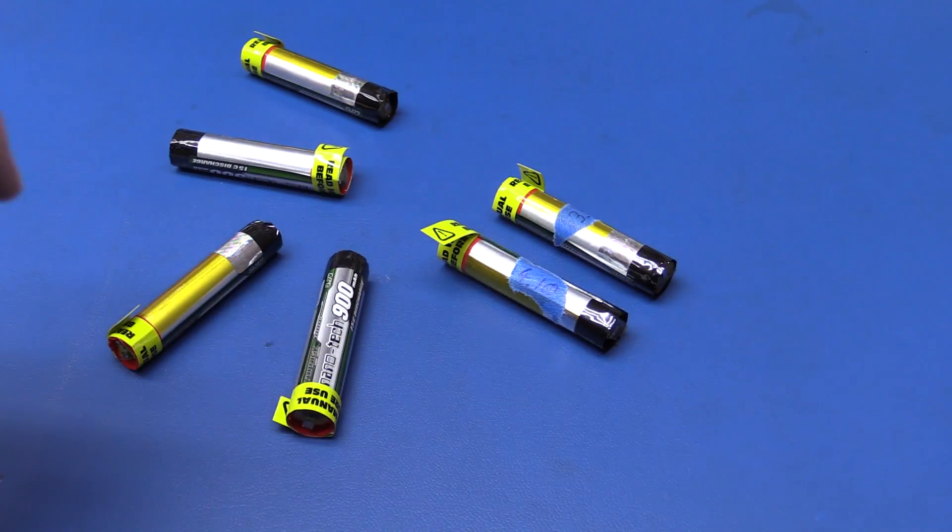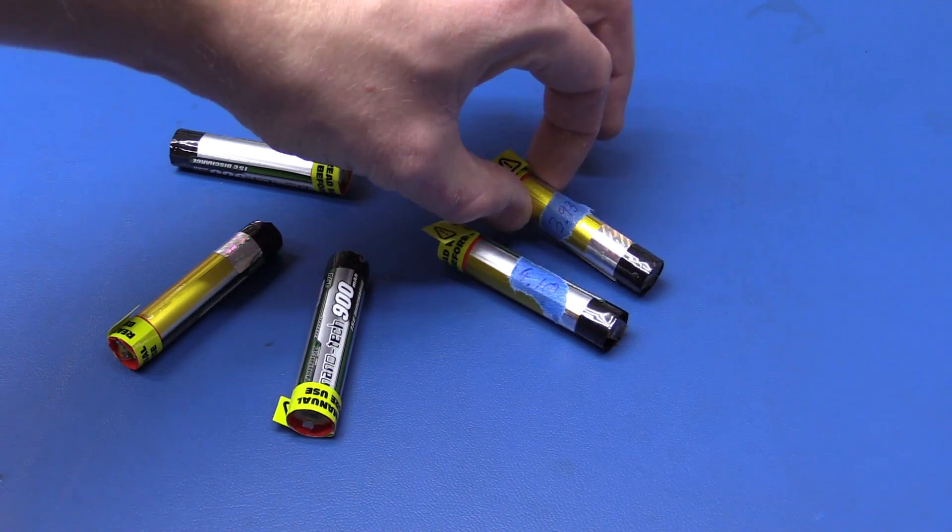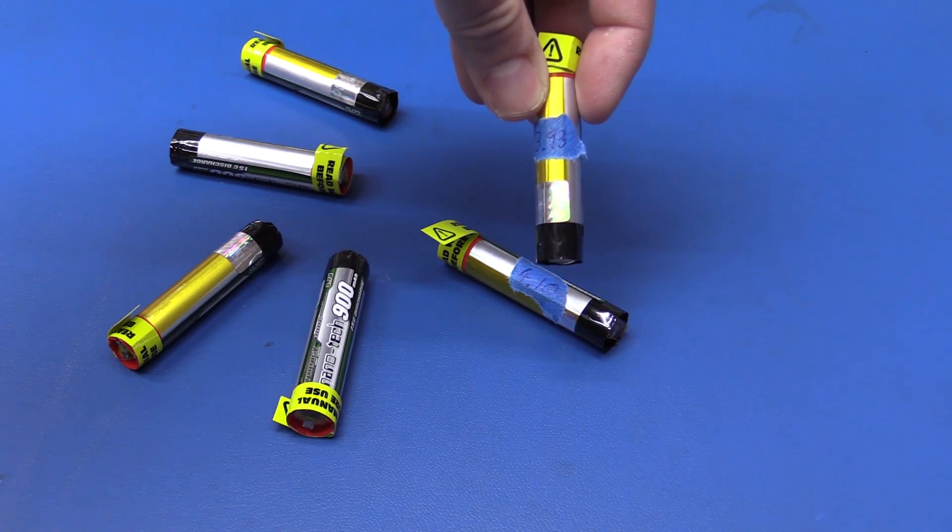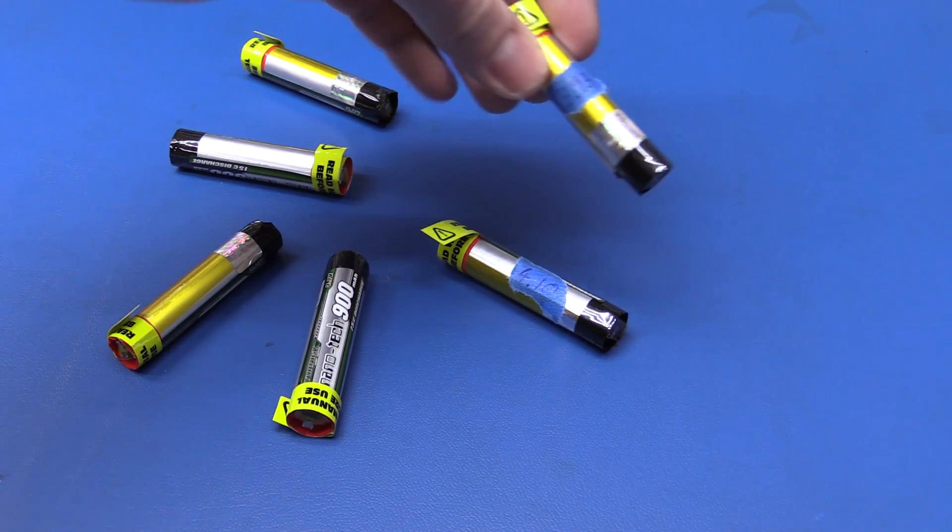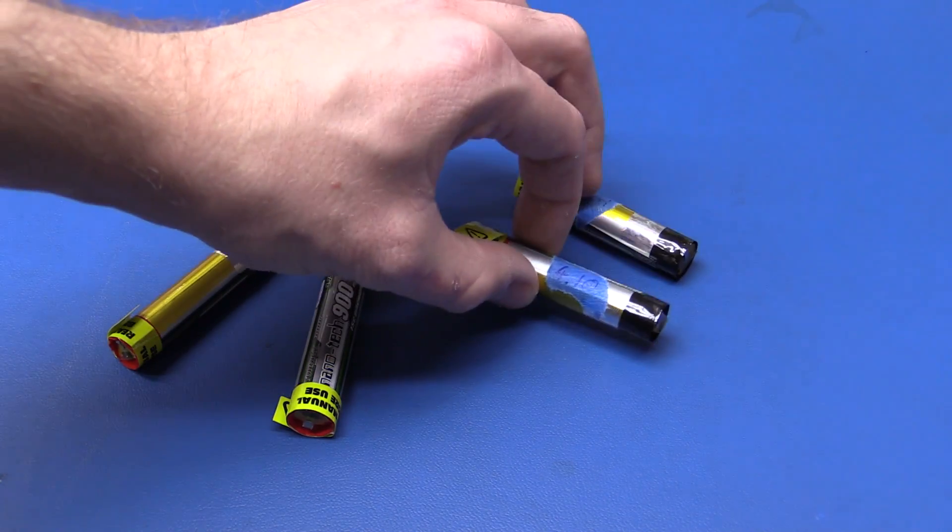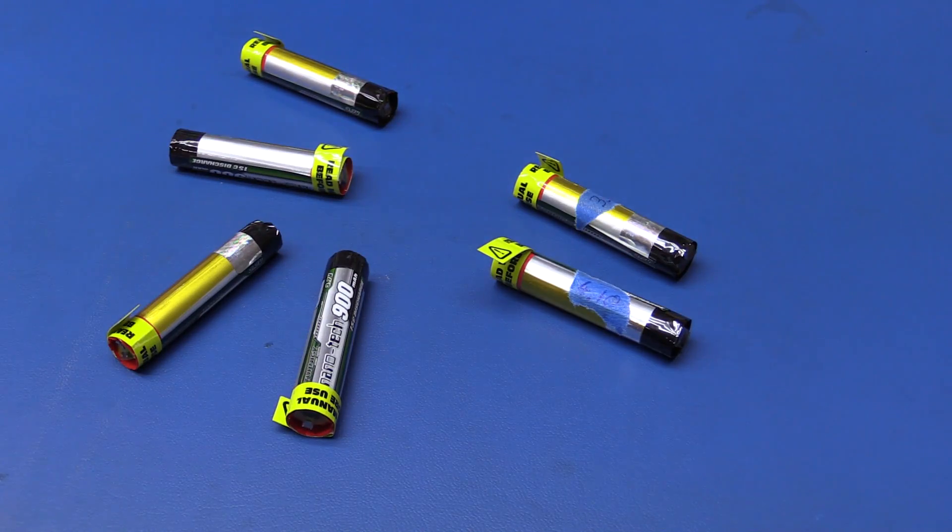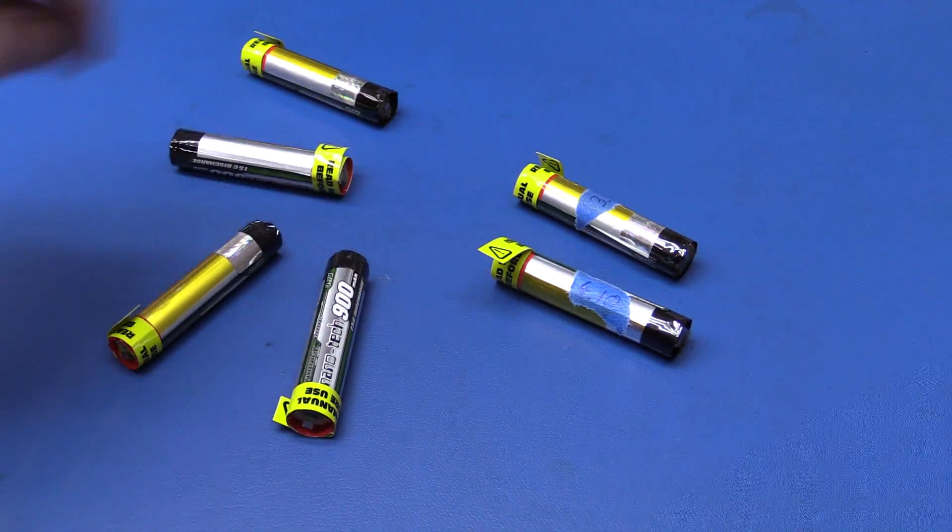So that's what I started to do now. I measured all the voltages and I noticed that there is 197 millivolts in difference between the lowest and the highest one, and it's just out of these six batteries.